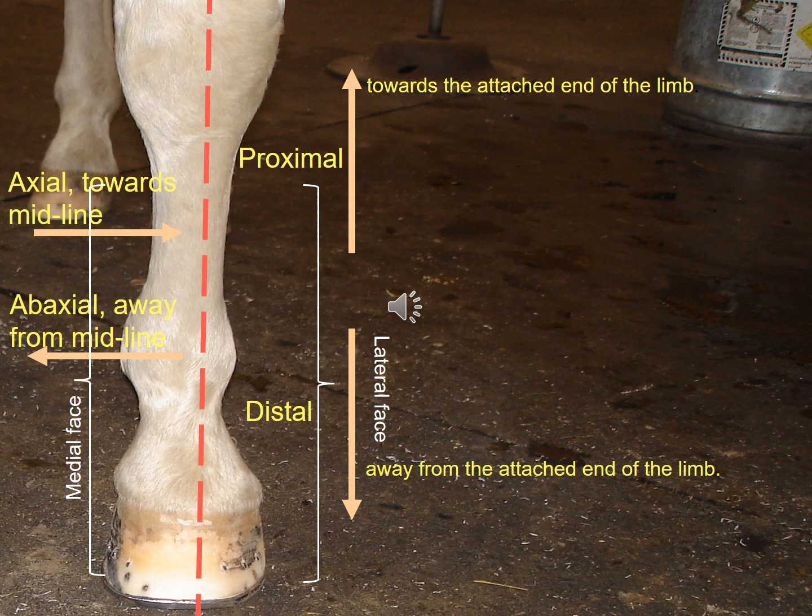Axial and abaxial we don't use too much, but there are ligaments of the pastern joint where that's how they're described, because one pair is closer to the midline and another pair is further away from the midline. Probably the most common terms that we use are lateral for the outside face of the leg and medial for the inside face of the leg.